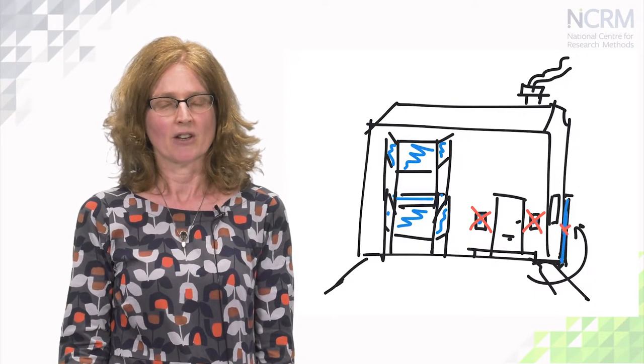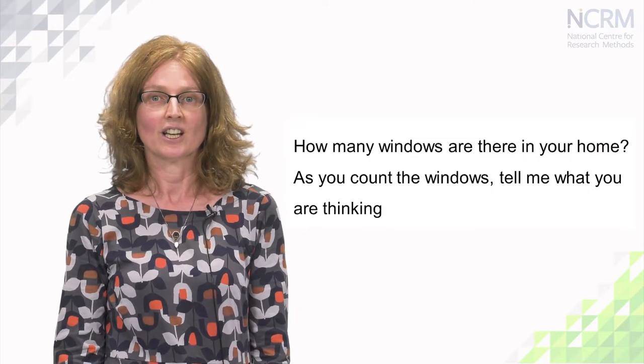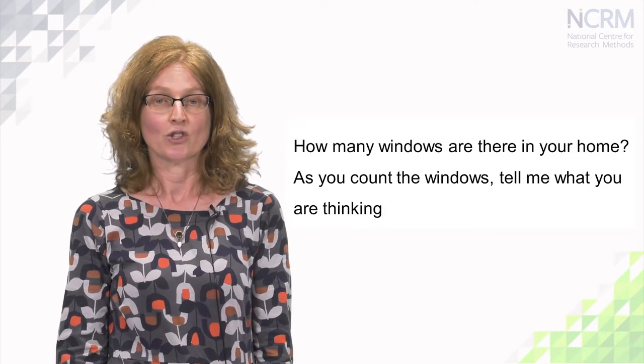And then I go into the bedroom and that's got another bay window in it, so that's another set of windows. Then I go into the kitchen and there's a window there. There's also a door which is made of glass but that's a door so I'm not going to count that. And finally there's the bathroom and that's got a window too. So that's front room, bedroom, kitchen, bathroom — I've got four windows. Now let me ask you the same question: how many windows are there in your home? As you count the windows, tell me what you're thinking.